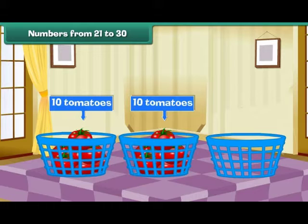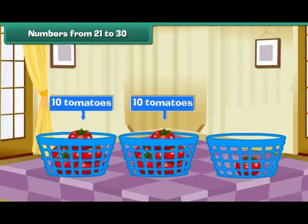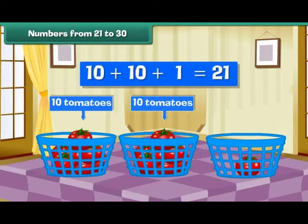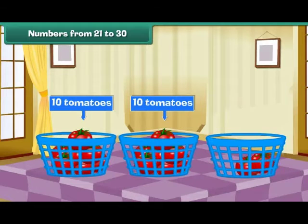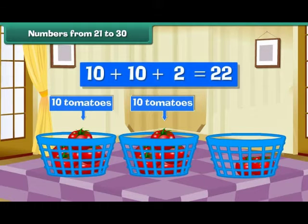Here is an empty basket. Let us place a tomato inside it. We have two tens and one — that is 21 tomatoes. Place one more tomato in the third basket. We have two tens and two — that is 22 tomatoes.